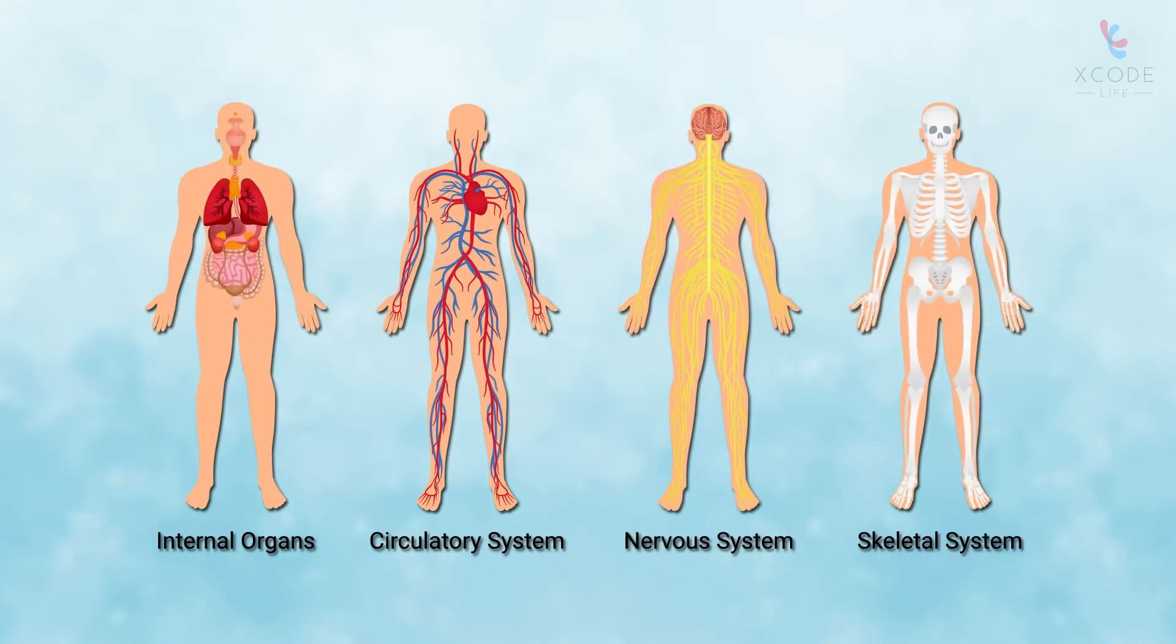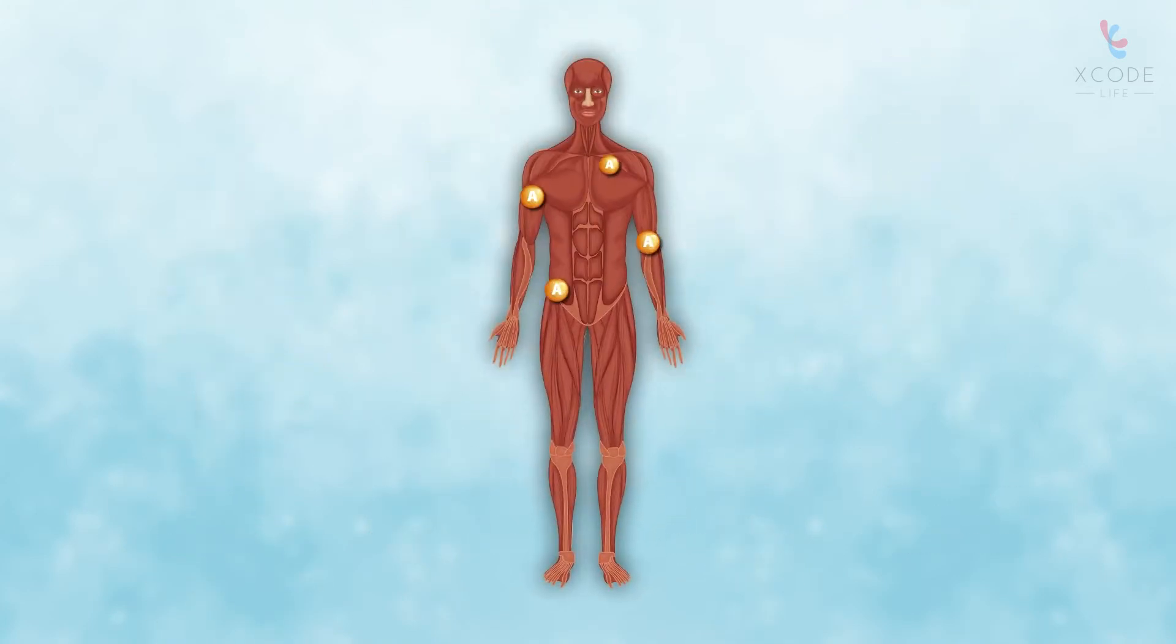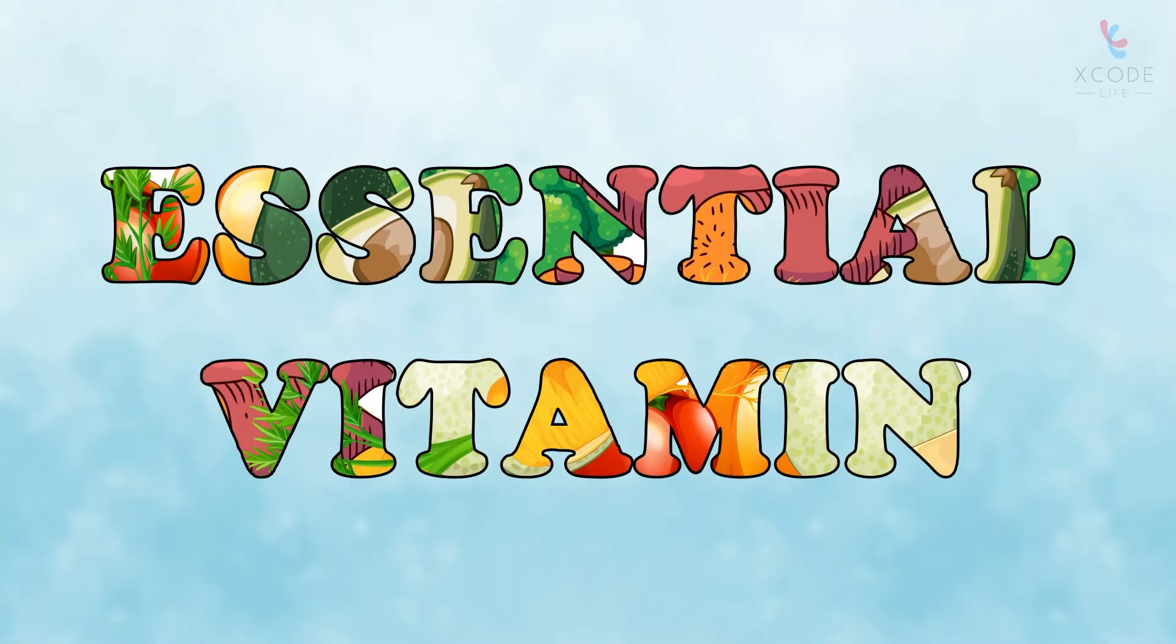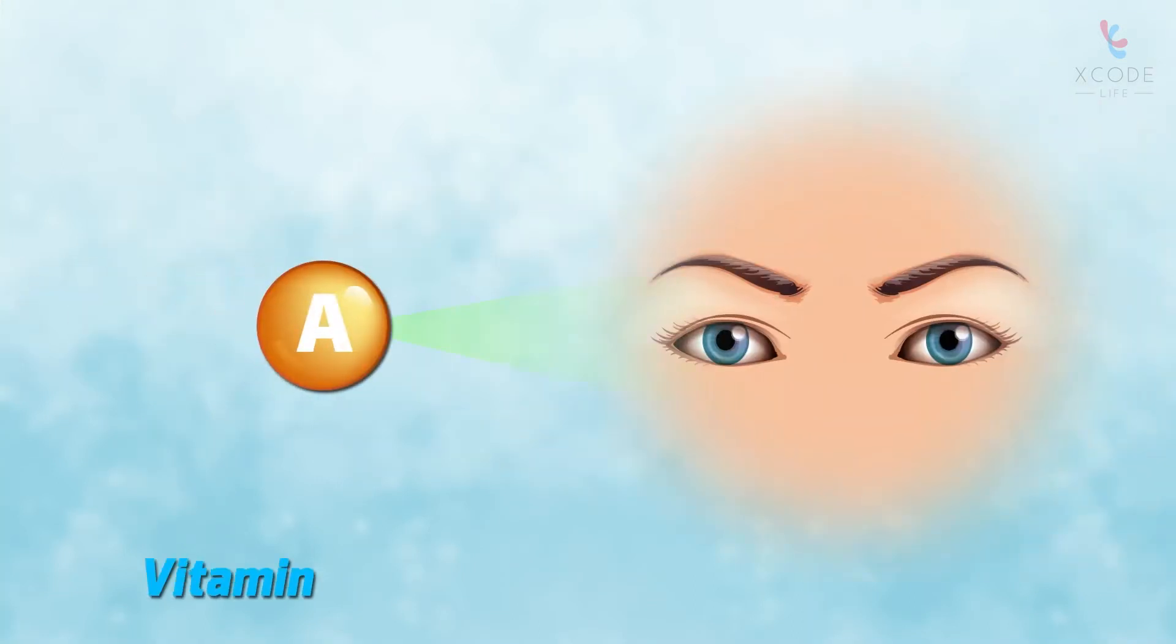Vitamin A is important for the overall development and maintenance of the body. Our body does not produce vitamin A on its own; it needs to be supplemented through diet. That's why it's called an essential vitamin. We have all been told that vitamin A is essential for good vision.